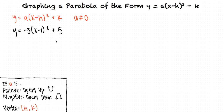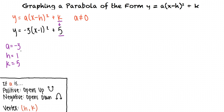Comparing this given equation with the standard form above it, we can identify a, h, and k. So a equals negative 3, h equals 1, and k equals 5. Since a is negative 3, we know our parabola will open downward. And since the vertex can be defined as h comma k, the vertex of our parabola is 1 comma 5.